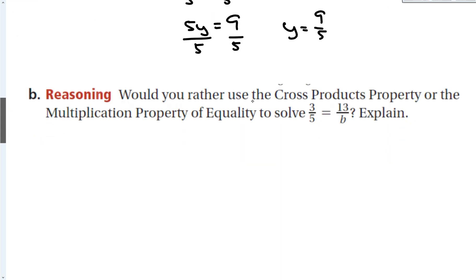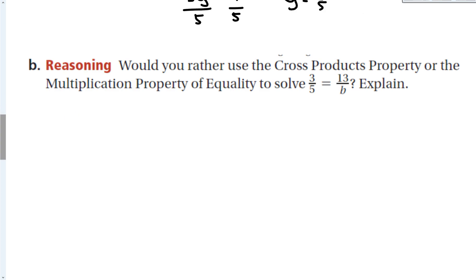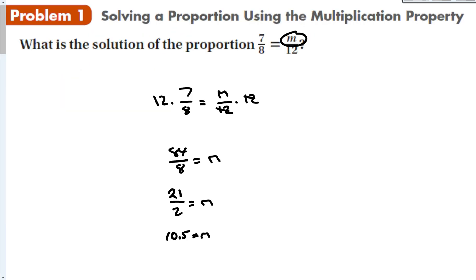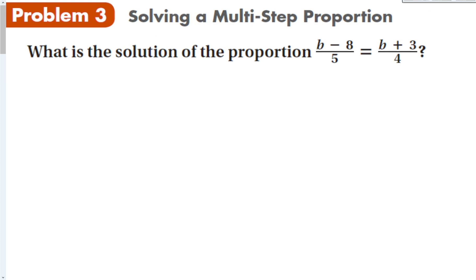For this reasoning question, would you rather use the cross-products property or the multiplication property to solve this equation? Because the variable is in the bottom, we're going to use the cross-products property to make this a lot easier. We could change this equation around and then use the multiplication property, but that's just more chance for a mistake. In fact, any proportion that you see, you should get in the habit of realizing that you can just use the cross-products property, even with my first one. I could, if I wanted to, multiply 7 times 12 to give me 84 equal to 8M. Divide both sides by 8, and notice that I get the exact same thing as before.